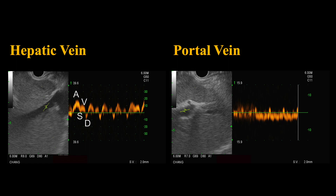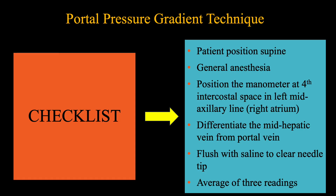The mid-hepatic vein has a thin wall with a four-phased pulse wave pattern, versus a thick hyperechoic margin with uniform venous hum of the portal vein. After the vessel is punctured, one milliliter of heparinized saline is flushed, and once air bubbles are visualized at EUS, the pressure readings are obtained. The average of three readings in the mid-hepatic vein and left portal vein are obtained, and the difference will be the portal pressure gradient. A value of five is the cutoff to determine the presence of portal hypertension.